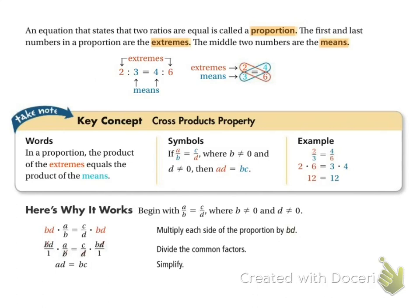You only use cross multiplication if there's an equal sign in between two fractions. So a over b equals c over d. Then you can multiply this way and multiply this way, so we get ad equals bc.